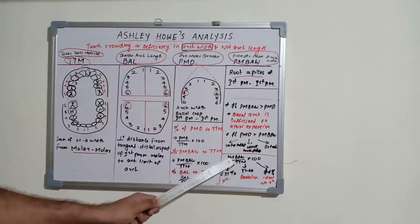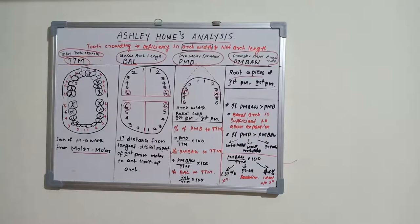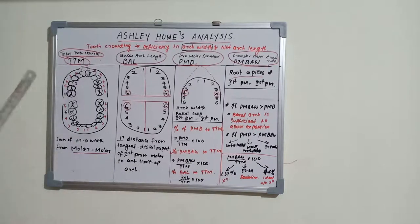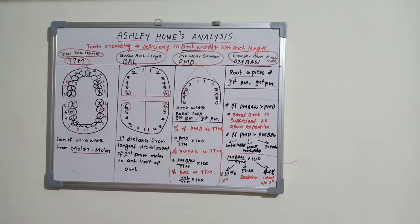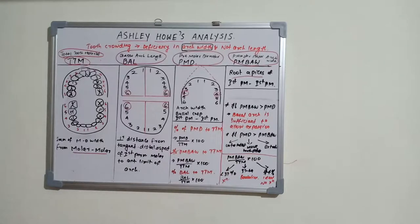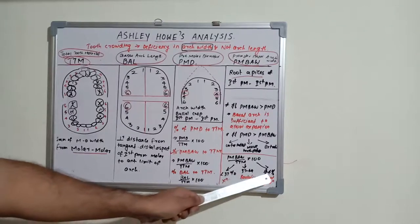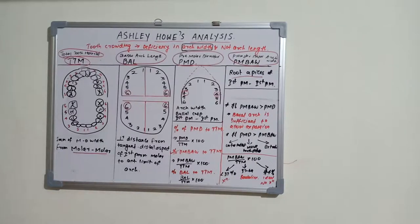If the premolar basal arch width to total tooth material percentage is less than 37%, the patient requires extraction. If the value is between 37% and 44%, it is a borderline case and may or may not require extraction depending on other parameters. If the value is equal to 44%, it is an ideal case and extraction is not required.